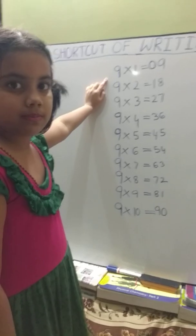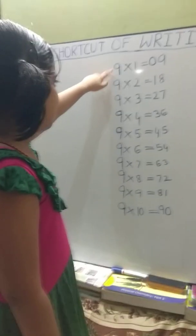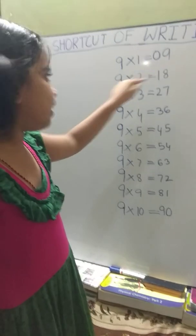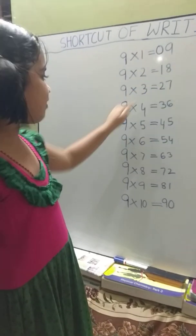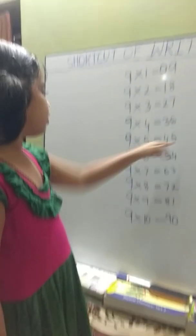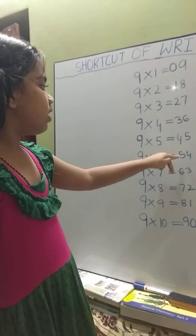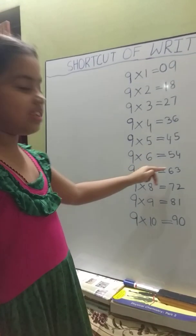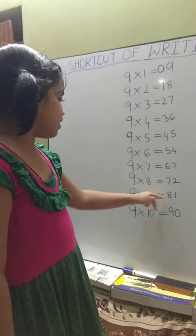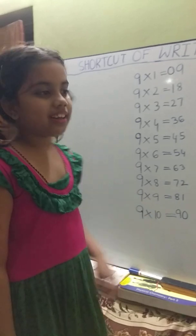Look at the board. 9 times 1 is 9, 9 times 2 is 18, 9 times 3 is 27, 9 times 4 is 36, 9 times 5 is 45, 9 times 6 is 54, 9 times 7 is 63, 9 times 8 is 72, 9 times 9 is 81, 9 times 10 is 90.